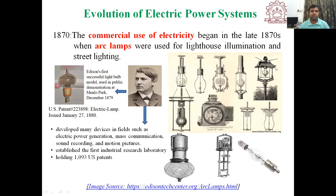In 1870, the commercial use of electricity began. At that time, people were using only arc lamps for lighting — these were also used for street lighting.